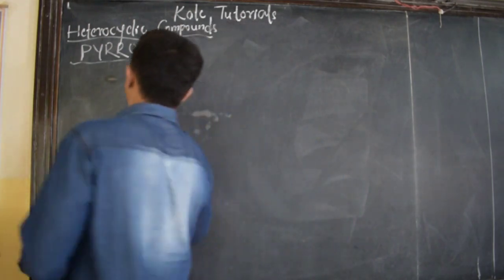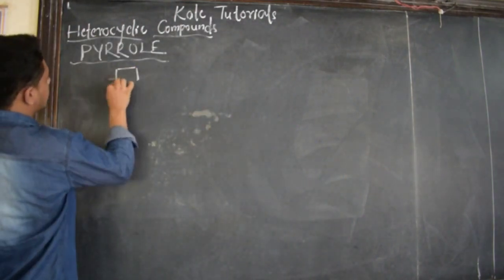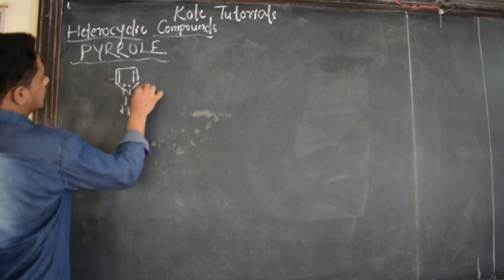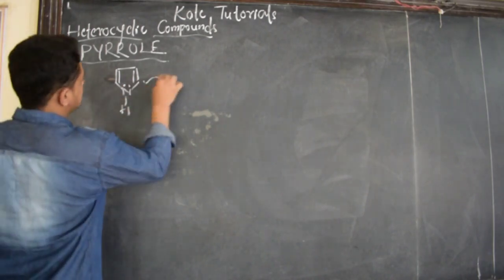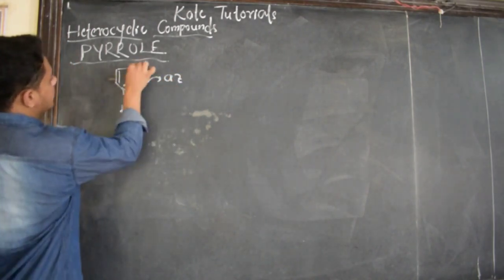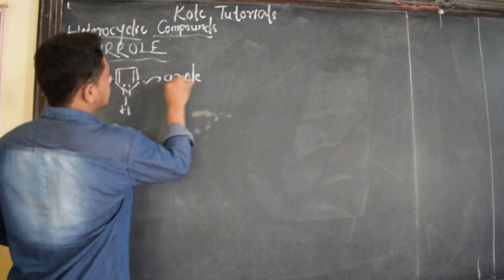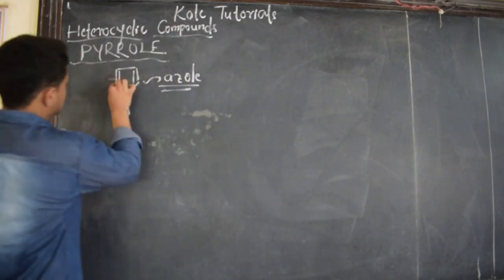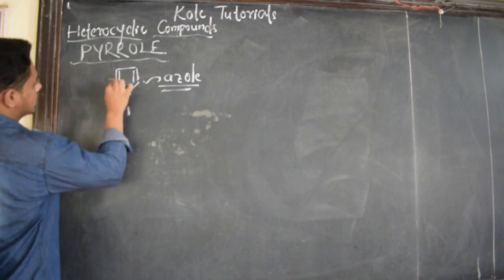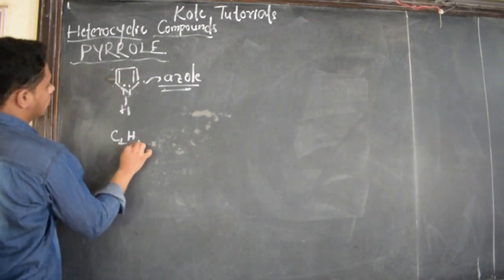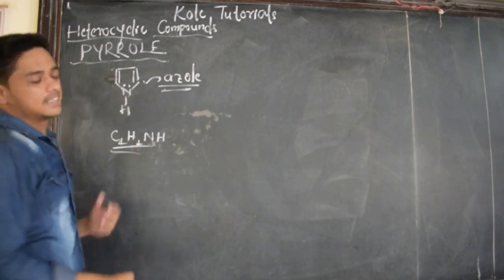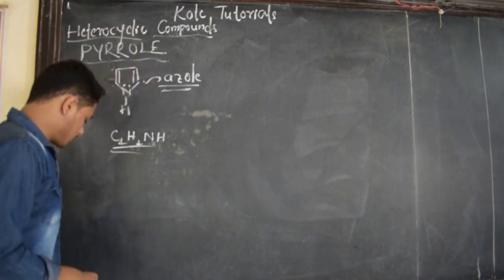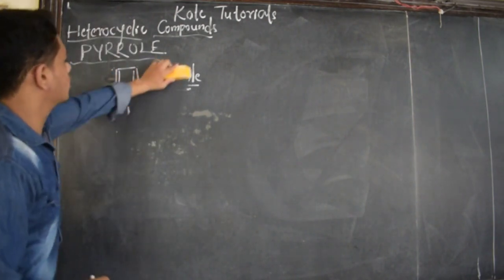Pyrrole — the IUPAC nomenclature for this compound, since it contains nitrogen and is a five-membered ring, is Azole. Azole is nothing but Pyrrole. And it can be written as C4H4NH. Pyrrole can also be written as C4H4NH. That is Pyrrole, also known as Azole.